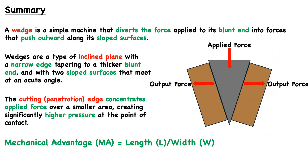Let's review some of the most important information we learned about wedges. Wedges are simple machines that divert force applied to their blunt end into forces that push outward along their sloped surfaces. Wedges are a type of inclined plane, with a narrow edge tapering to a thicker blunt end, and with two sloped surfaces that meet at an acute angle. The edge where that acute angle is formed is called the cutting edge, the penetration edge, or simply the tip edge.